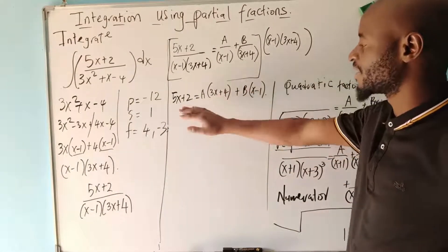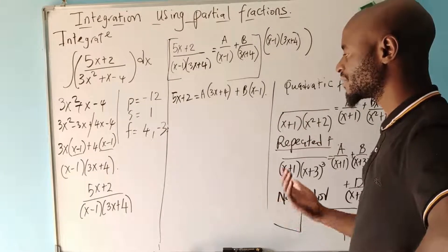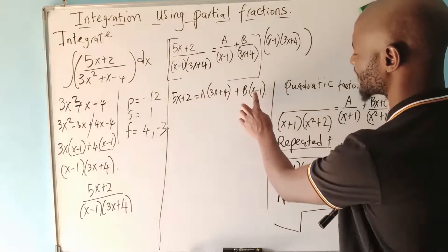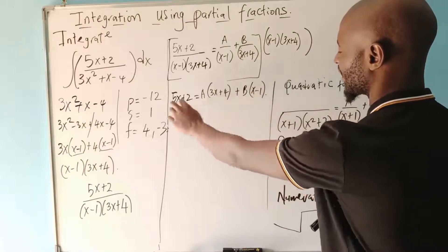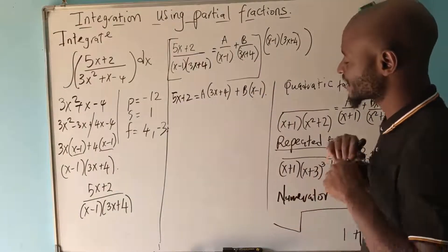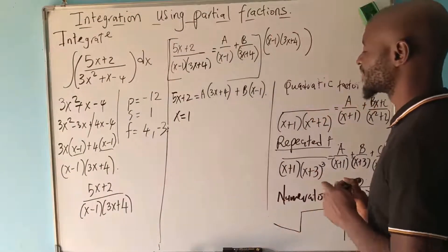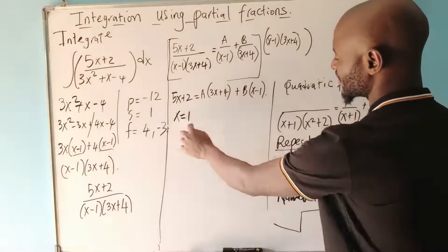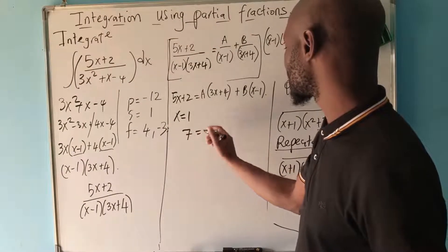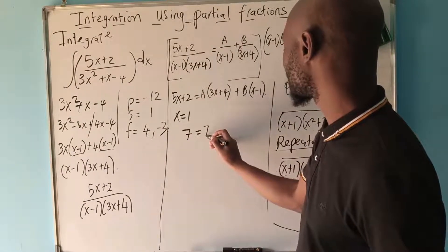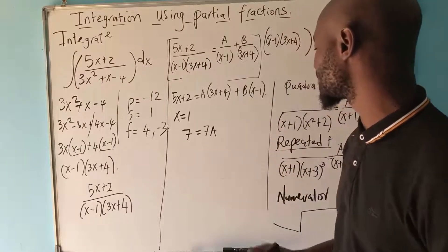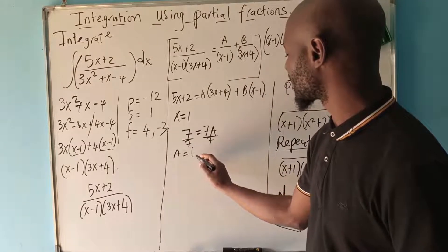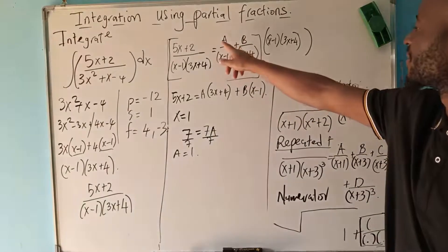You can let x be any value to create equations, or make one factor zero to isolate a constant. If we let x equal 1, then x minus 1 becomes zero, leaving: 5 times 1 plus 2 equals A times 3 times 1 plus 4, so 7 equals 7A. Dividing, A equals 1.